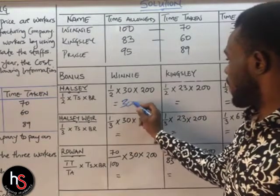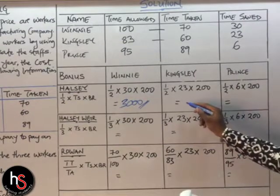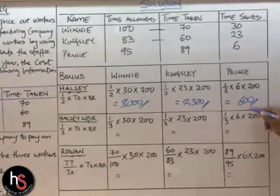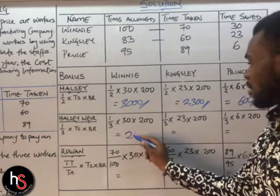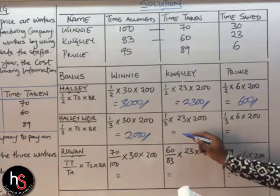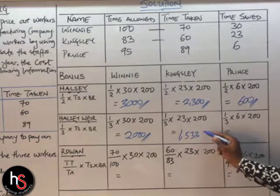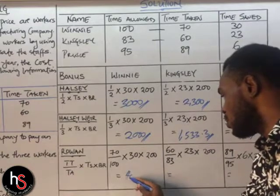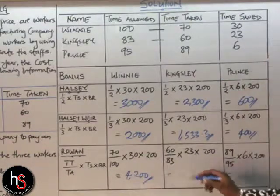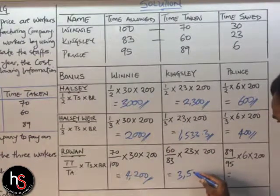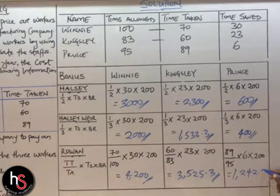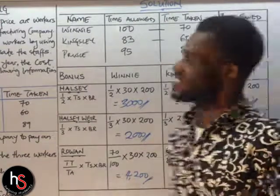The answers are as follows. Halsey bonus: Winnie = 3,000; Kingsley = 2,300; Prince = 600. Haslam bonus: Winnie = 2,000; Kingsley = 1,533.3; Prince = 400. Rowan bonus: Winnie = 4,200; Kingsley = 3,525.3; Prince = 1,242.2.